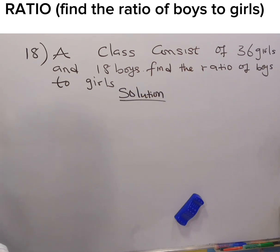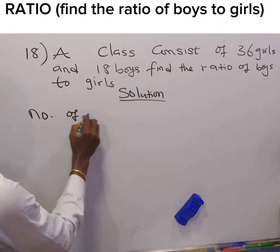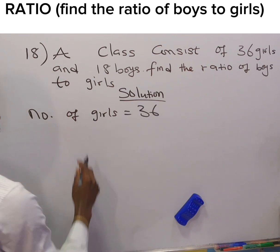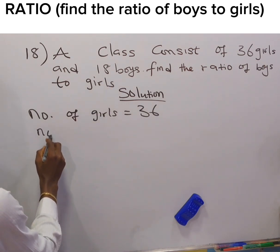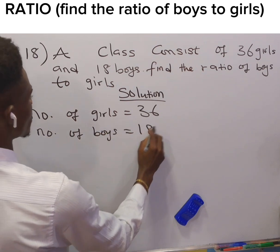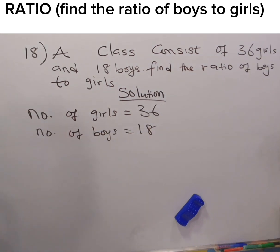A class consists of 36 girls, which means the number of girls is 36. And 18 boys, which is the number of boys is 18. Find the ratio of boys to girls.